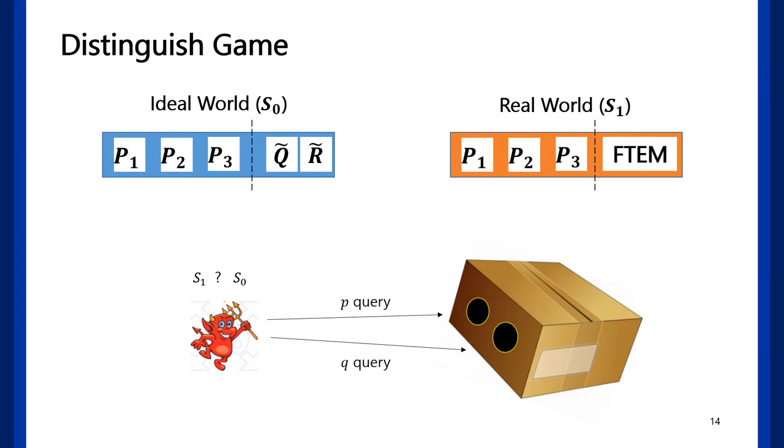In provable security, when we say some construction is secure, it means the construction is indistinguishable with ideal random construction. For a block cipher, it will be random permutation. And for a tweakable block cipher, it will be random tweakable permutation.